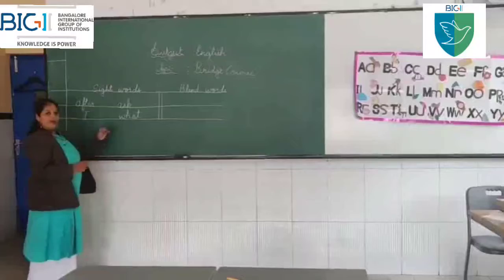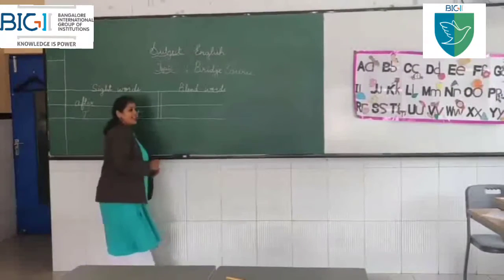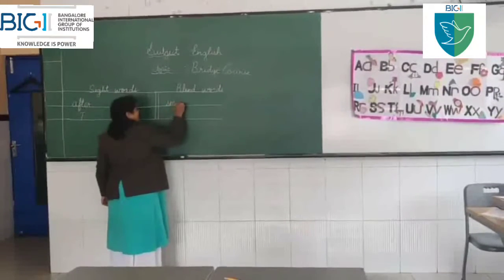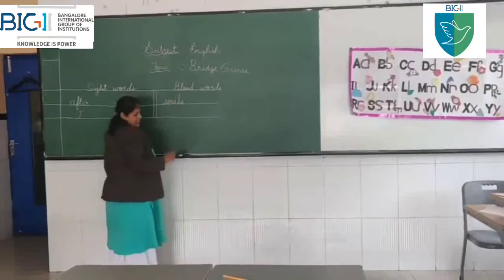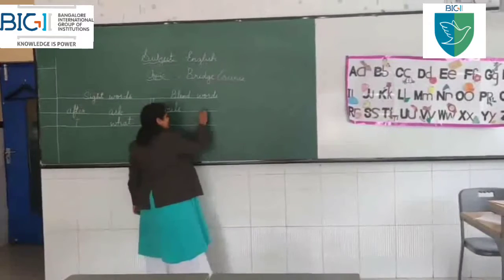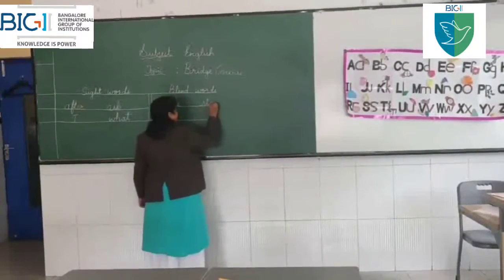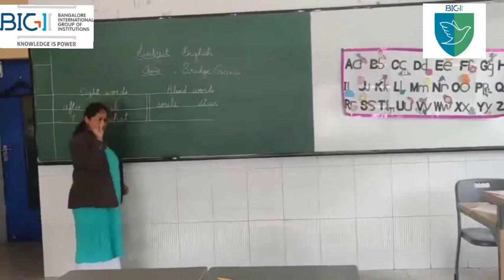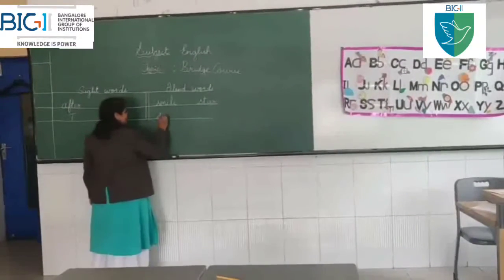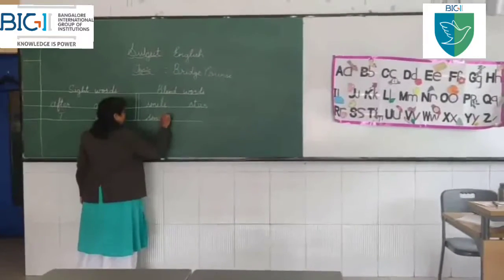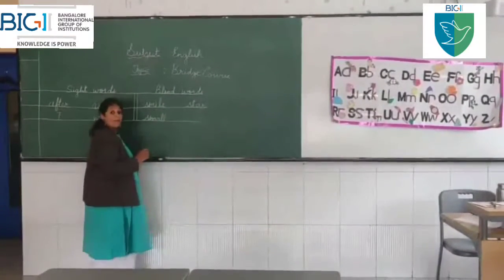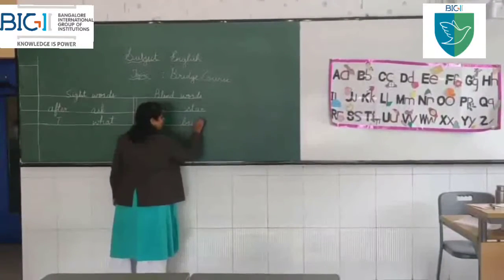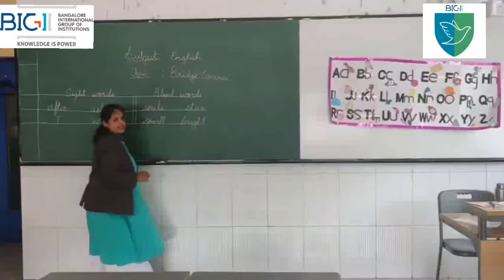Now moving on to blend words, let's start with 'smile', 'small', 'light', and 'bright'.